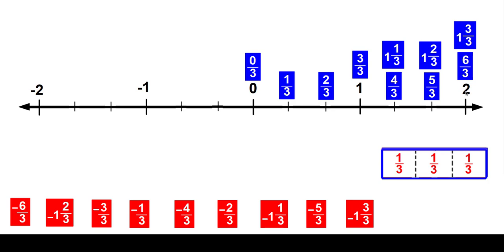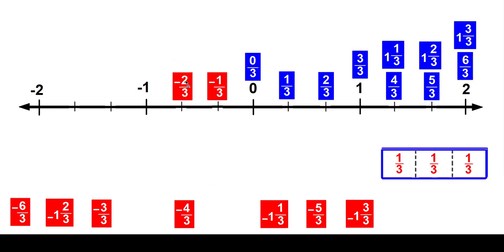So the opposite would be negative one third. Notice they're the same distance — they have the same absolute value, the same distance from zero, but they're on opposite sides of the number line. Here's two thirds, so this would be negative two thirds.